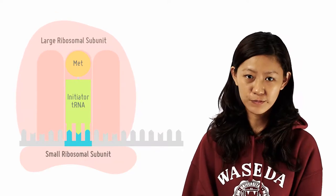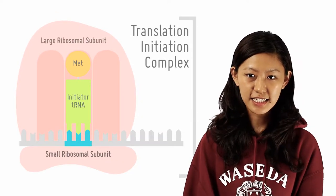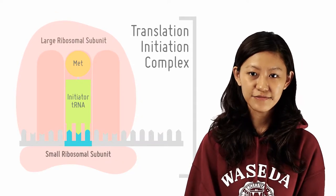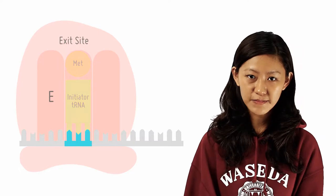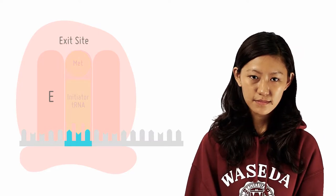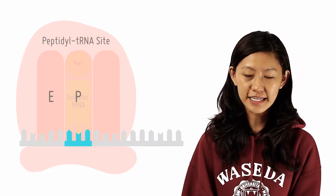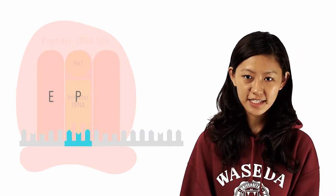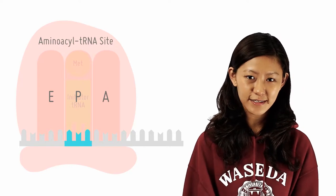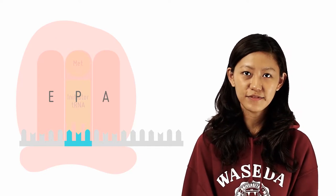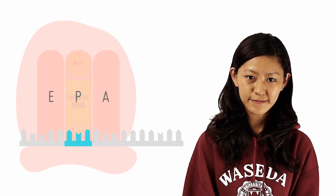Completing a ribosome, the translation initiator complex is formed with the use of GTP. So now the P site contains your initiator tRNA, and the A site is vacant for the addition of the next aminoacyl tRNA.